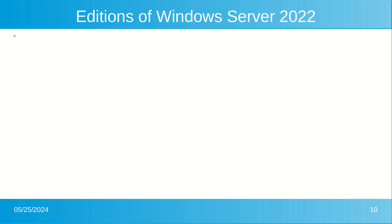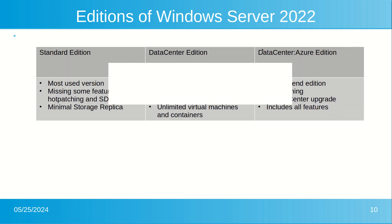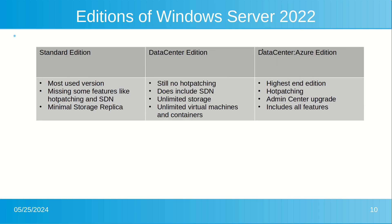There are three editions of Windows Server 2022 that you will find in the enterprise. The first is the Standard edition, next is the Datacenter edition, and last is the Datacenter Azure edition. This edition is only going to be found if you sign up for it within Microsoft Azure.